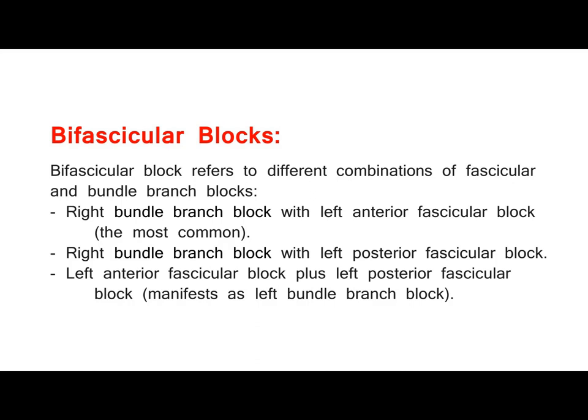Bifascicular block refers to different combinations of fascicular and bundle branch blocks. These include: right bundle branch block with left anterior fascicular block, which is the most common; right bundle branch block with left posterior fascicular block; and left anterior fascicular block plus left posterior fascicular block, which manifests as left bundle branch block.